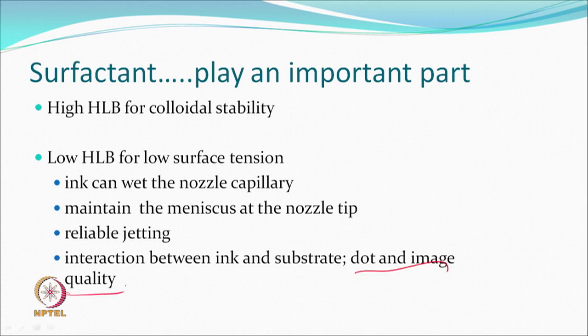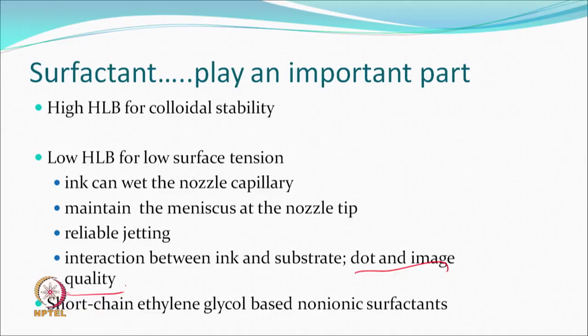A good balance is needed for the HLB of the surfactant. Too high an HLB gives good colloidal stability but affects surface tension and jetting. One must balance colloidal stability and relatively low surface tension. Surface tension should not be so low that the ink tends to float and ligaments become longer. Short-chain ethylene glycol based non-ionic surfactants may be optimized for colloidal stability, wetting, and jetting reliability of the ink.